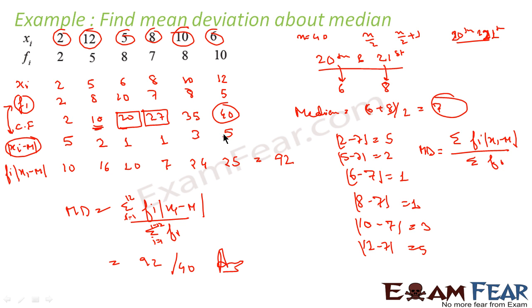We found the 20th term is 6 and the 21st term is 8. We took the mean of this to get the median. So median came out to be 7. Once we got the median, now we have found the distance of xi's from the median.